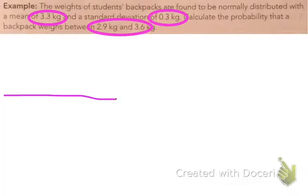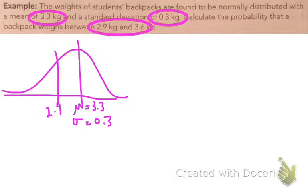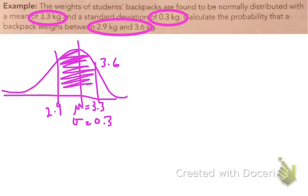The first thing we're going to do is draw our normal distribution and put our mean in the middle — that's our mean of 3.3 kilos and our standard deviation of 0.3 kilos. Now we need to put those values of 2.9 and 3.6 kilos onto the curve. So 2.9 is somewhere below the mean, and 3.6 kg is above the mean of 3.3. We want to find the area between those two points.